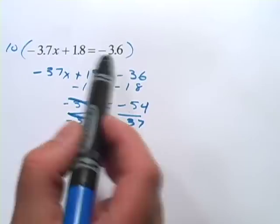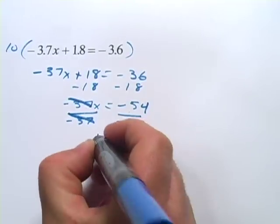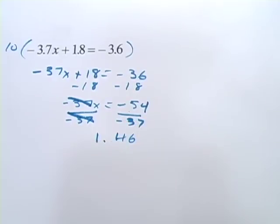Since we started with decimals, reporting the answer as a decimal might be okay. And this rounds off to something like 1.46. So that's a little bit of work with algebraic equations using decimals.